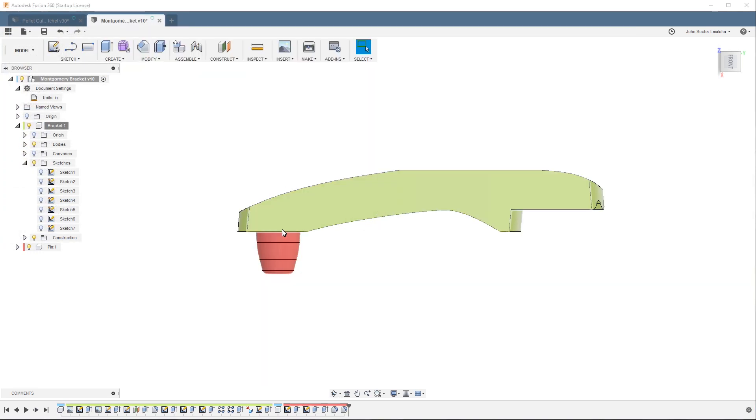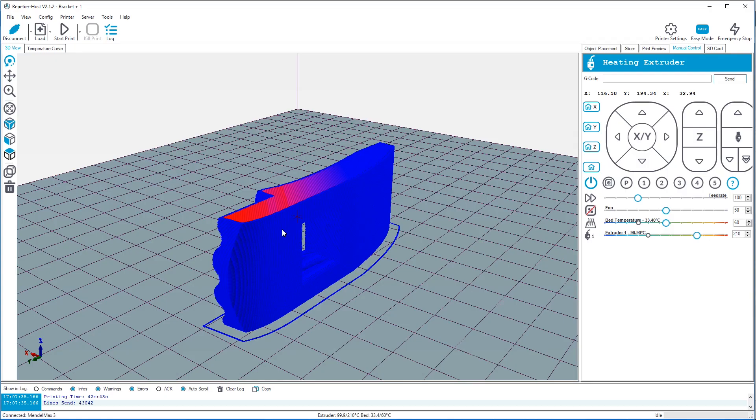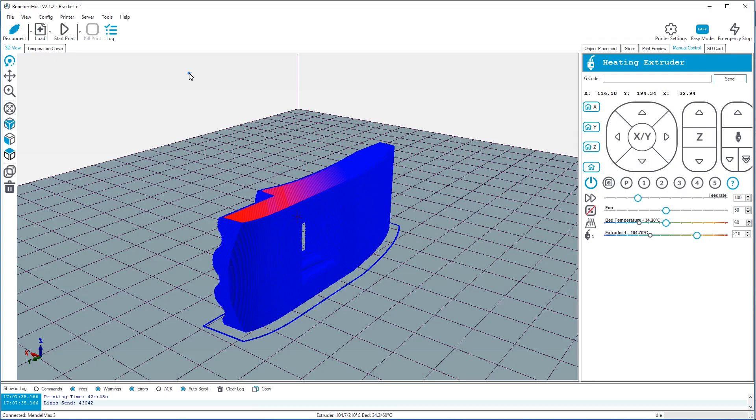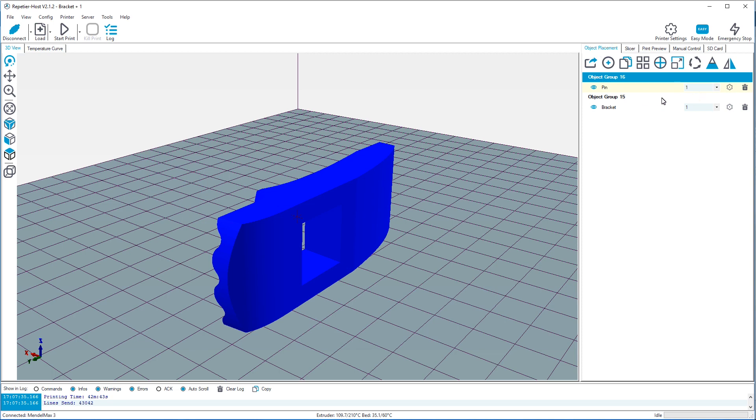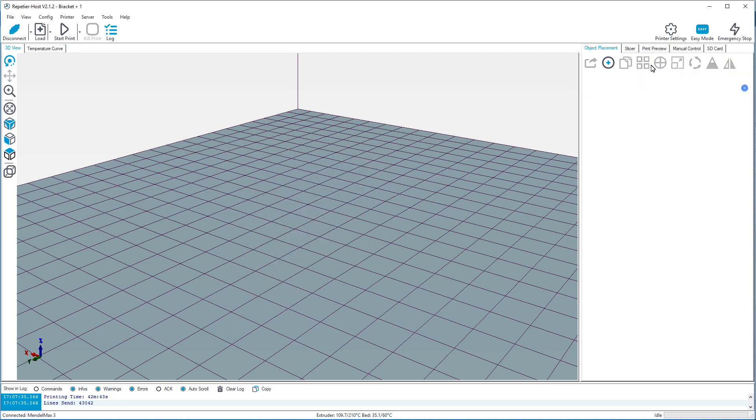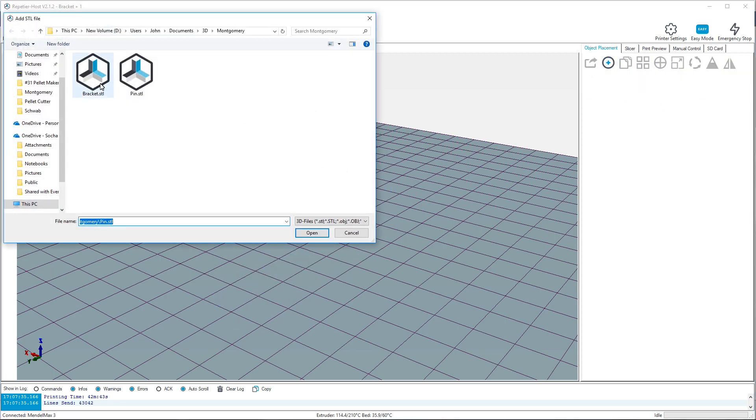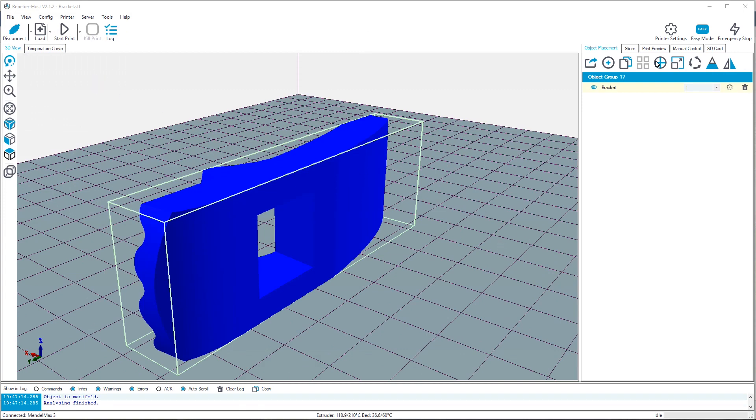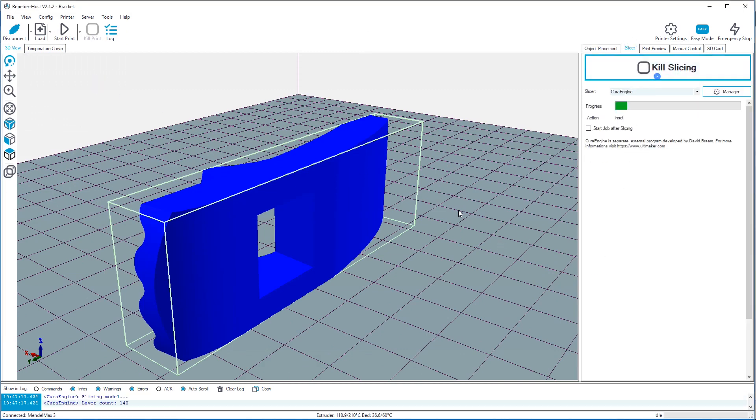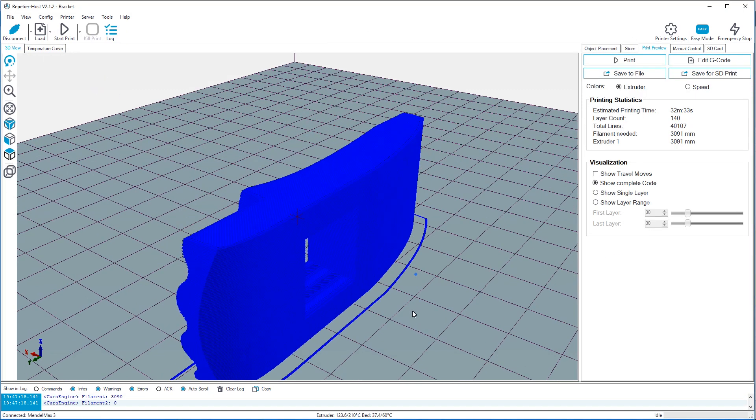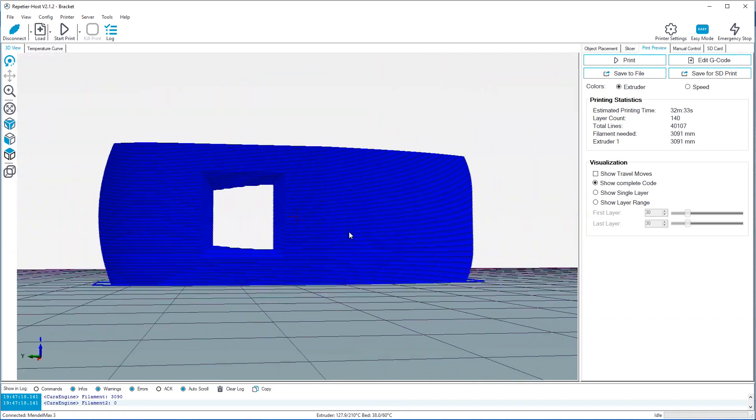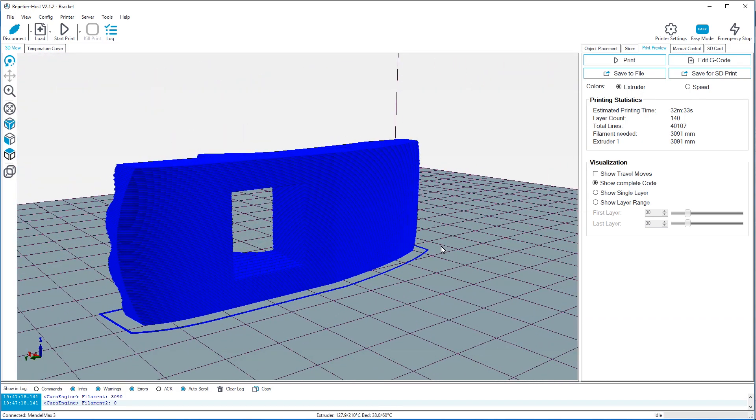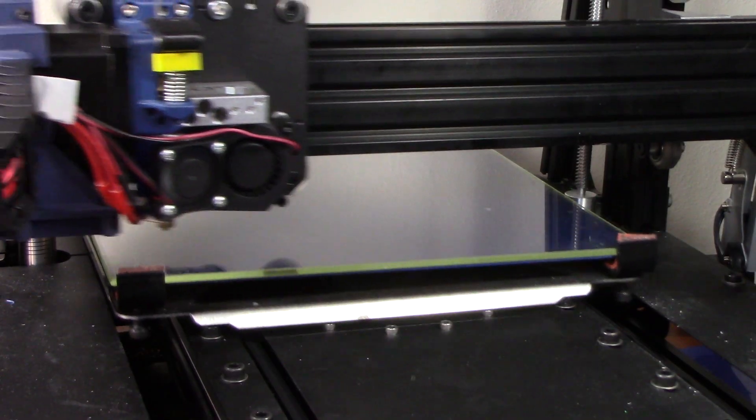And then when I head over to the 3D printer software over here, it didn't reload it. So let me open it back up again. Okay, that looks good. So I'll go ahead and slice it. This is what it's going to look like. And then I'll print it out and we'll come back.